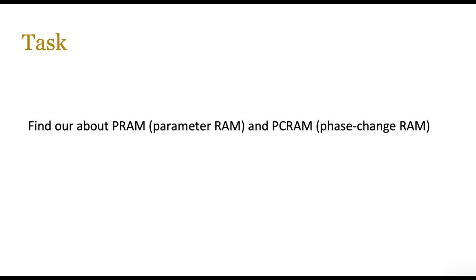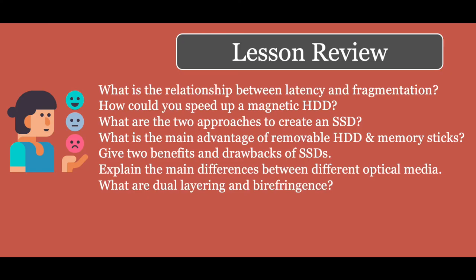That's the end of the lesson for today. A task to complete: find out about PRAM (parameter RAM) and PCRAM (phase change RAM), and how these are going to impact future computer development. By now you should know the relationship between latency and fragmentation — the more fragmented a hard drive is, the greater the latency. Review questions include: how would you speed up a magnetic hard disk drive? What are the two different approaches to creating an SSD using NAND and NOR? What is the main advantage of removable hard drives and memory sticks? Two benefits and drawbacks of SSDs? And you should be able to explain differences between optical media, dual layering, and birefringence.